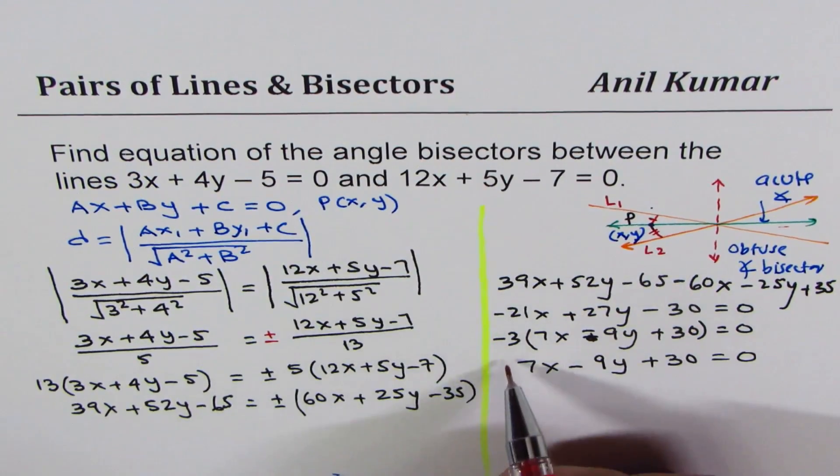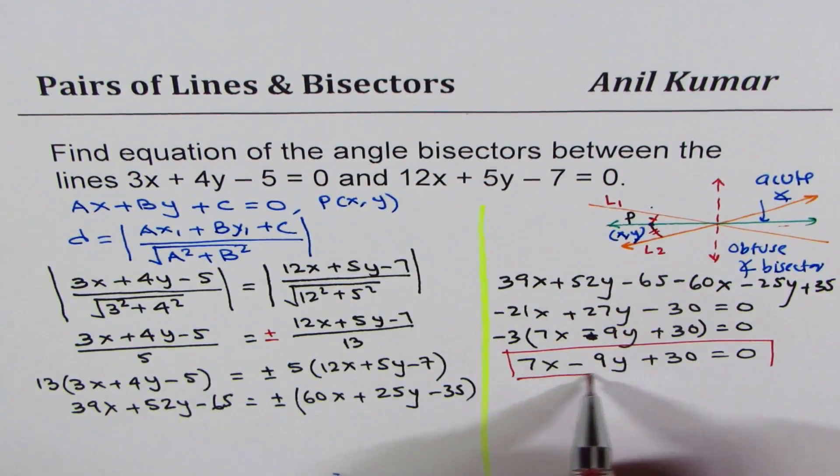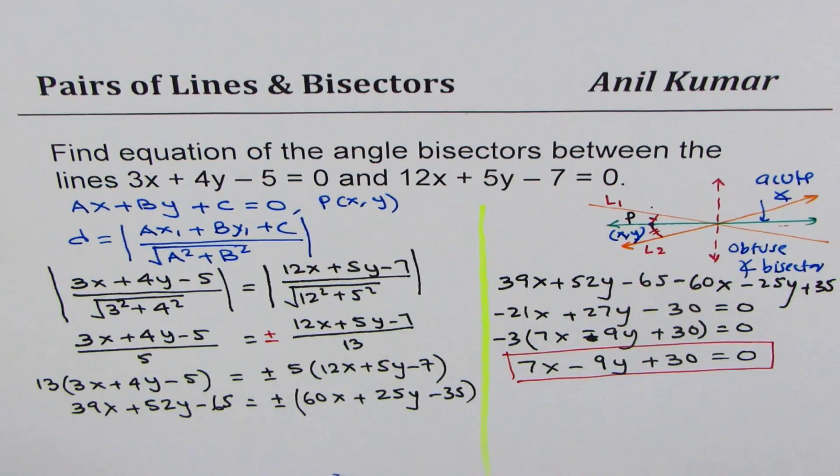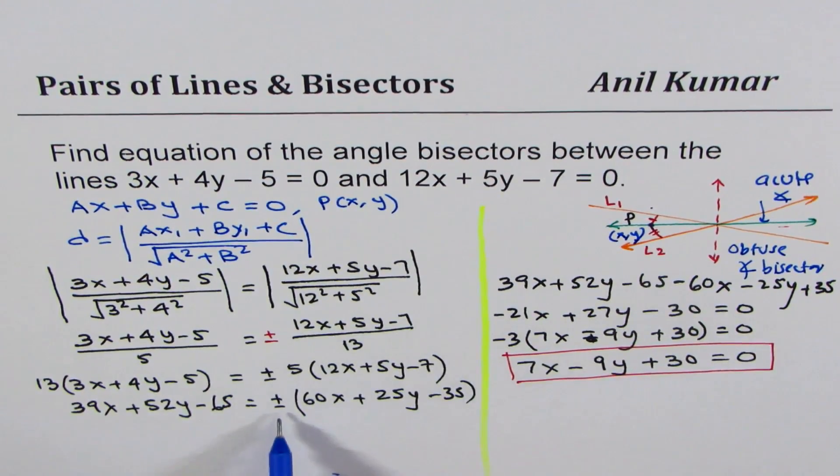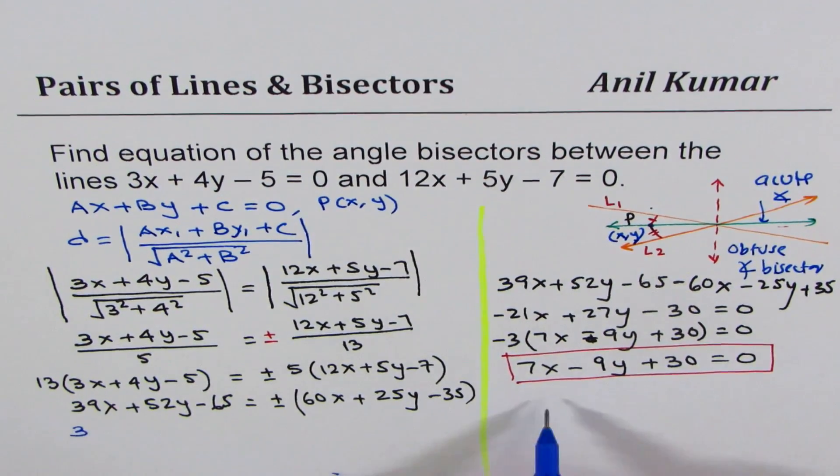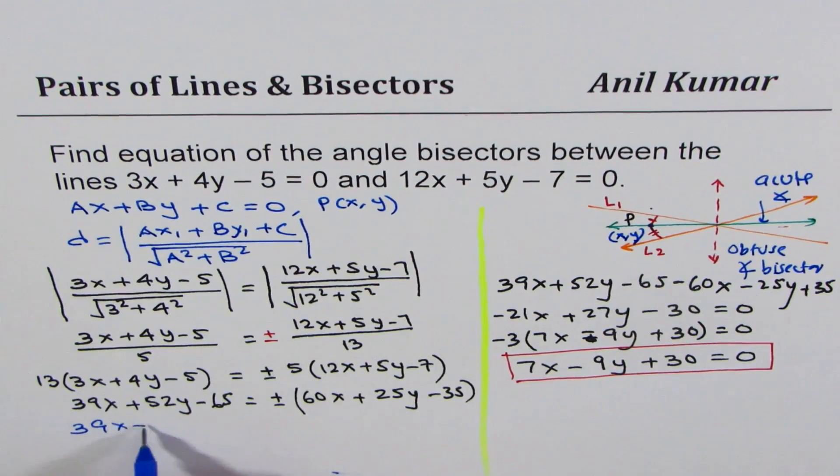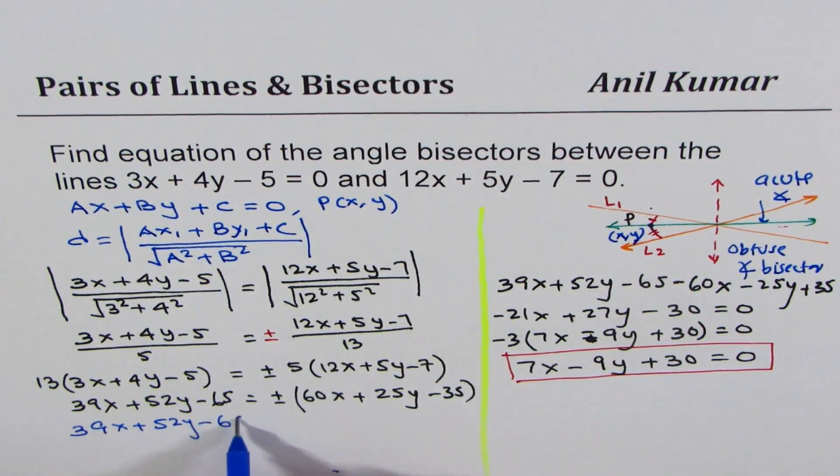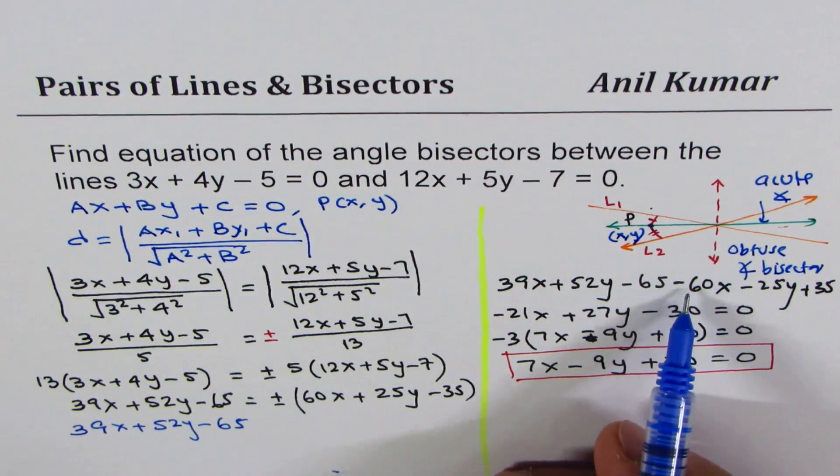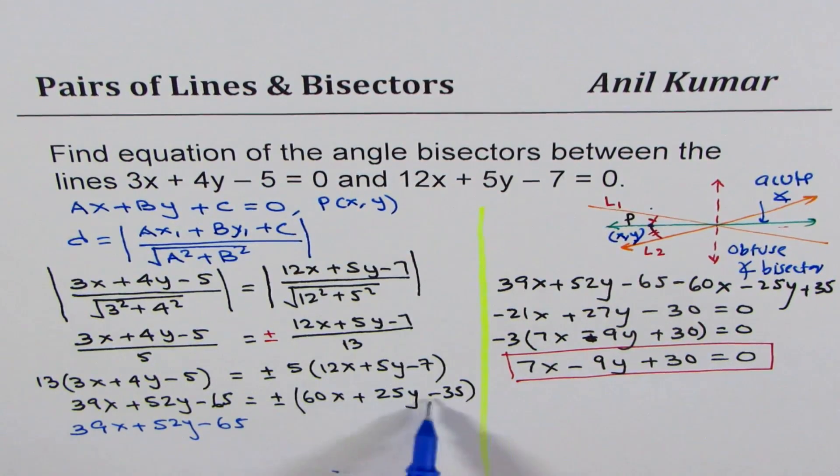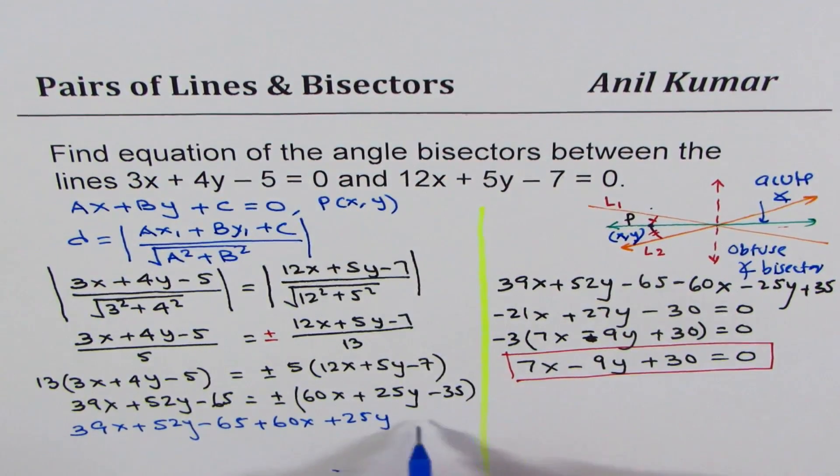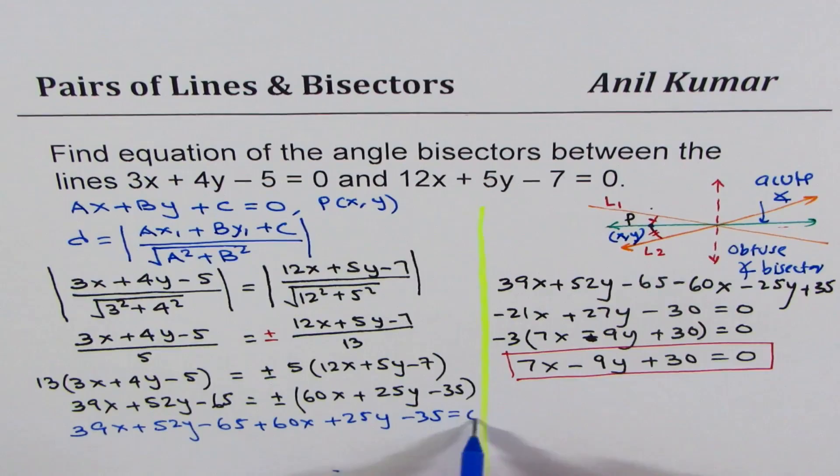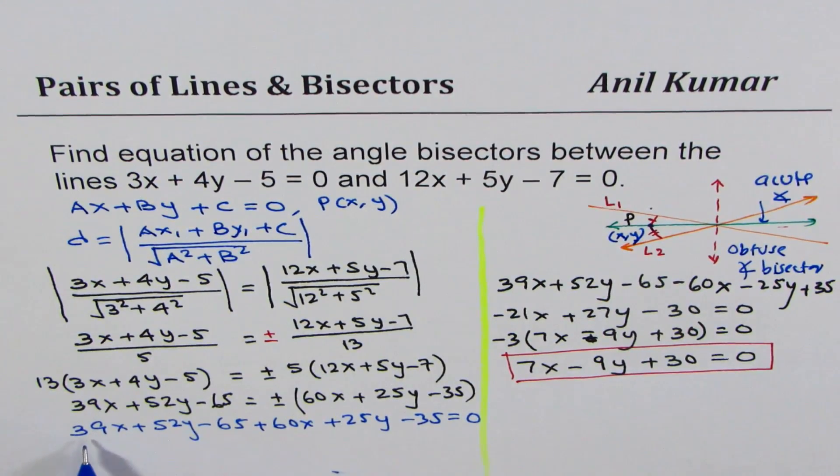For the second equation with the minus case: 39x + 52y - 65, and when we bring over the minus terms, they keep the same sign: +60x + 25y - 35 = 0. Now, 39 + 60 = 99x.